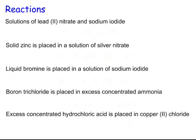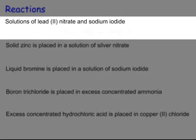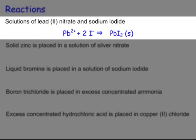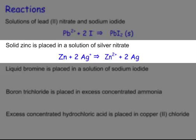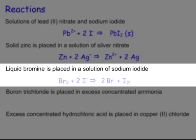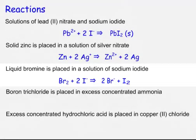Whenever we have two solutions together, think about a precipitation reaction. Remember what doesn't precipitate: alkali metal ions, nitrates, acetates, and ammoniums will not precipitate. Here I have Pb²⁺ plus 2I⁻ giving PbI₂, an ionic solid. Whenever you have a solid, liquid, or gas with a solution, go to your redox reduction reactions on your cheat sheet and flip one of the reactions, then combine them. Here zinc plus 2Ag⁺ gives Zn²⁺ plus 2Ag. Similarly, liquid bromine plus a solution gives Br₂ plus 2I⁻ producing bromide ion and iodine.